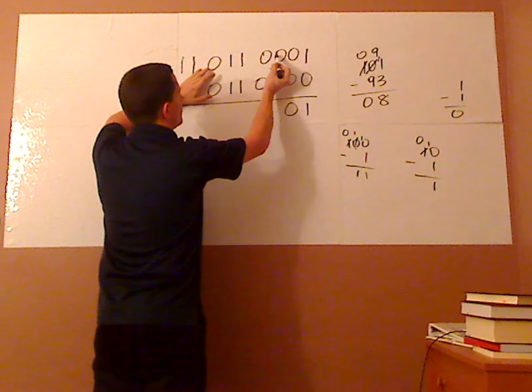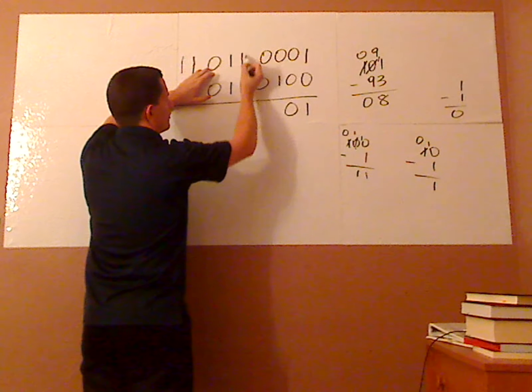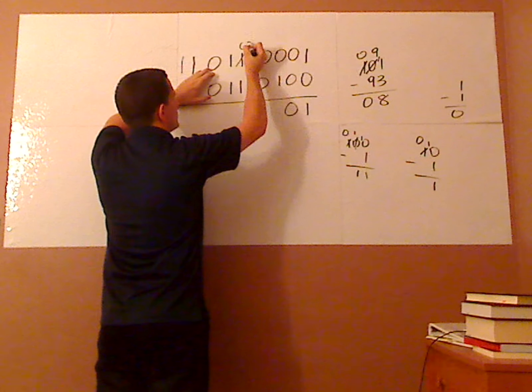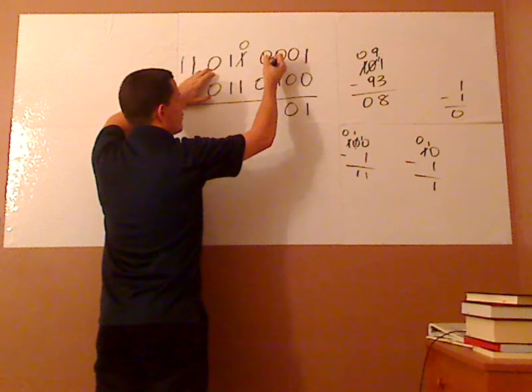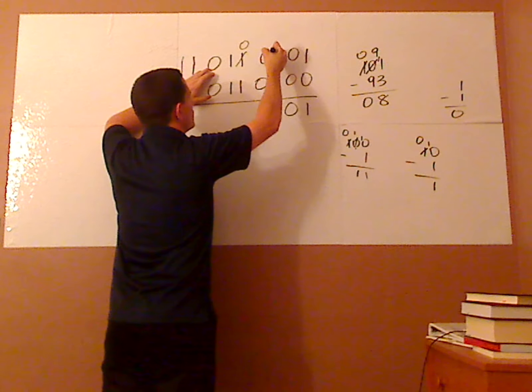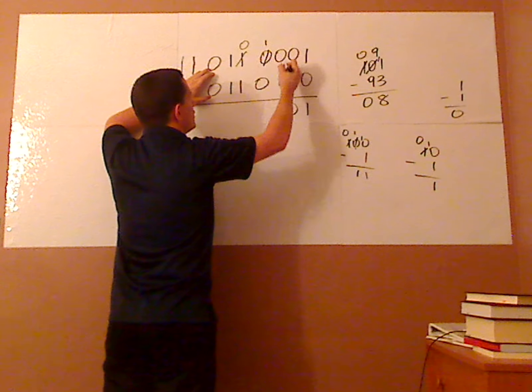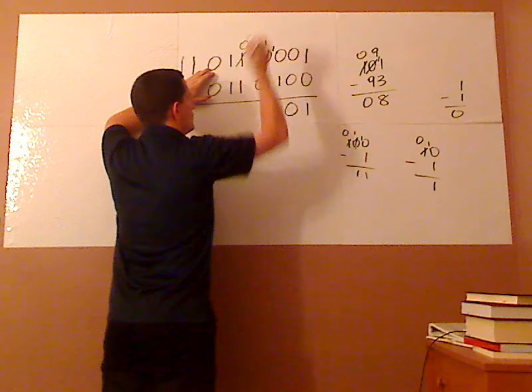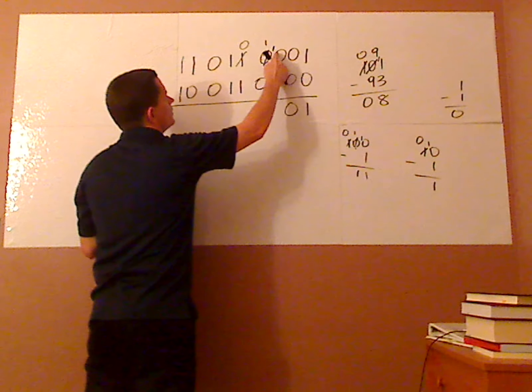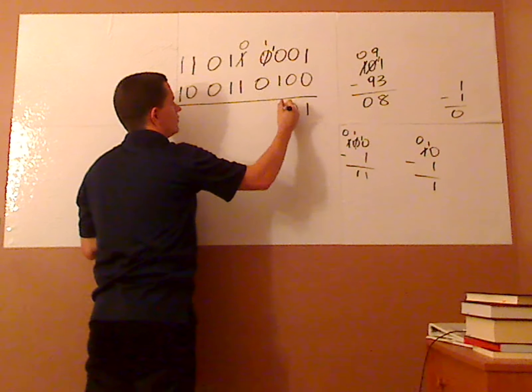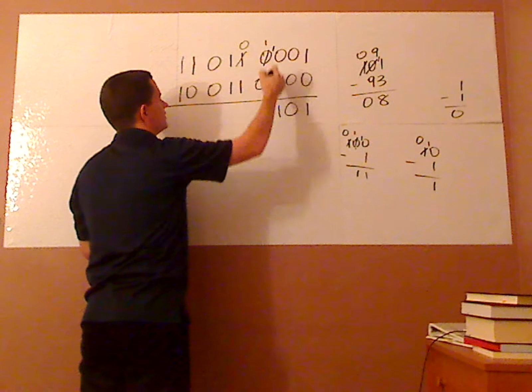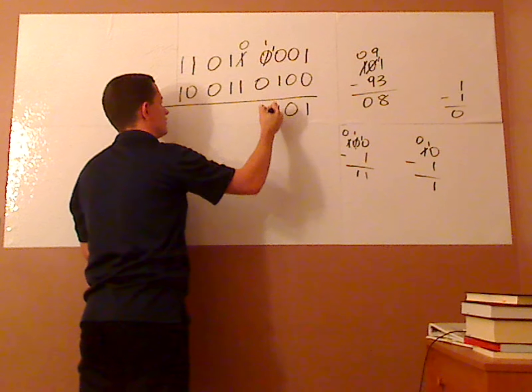So you go over, okay, I'm going to borrow this right here. That becomes a 0. And then over here, instead of dropping 9's, you're going to drop 1's. So that 0 becomes a 1, and then this becomes a 10 in binary. So this is 10 minus 1, which is 1. This is 1 minus 0, which is 1.